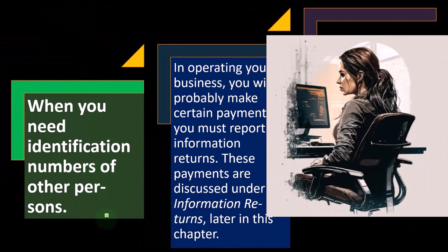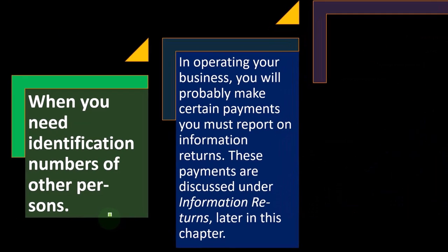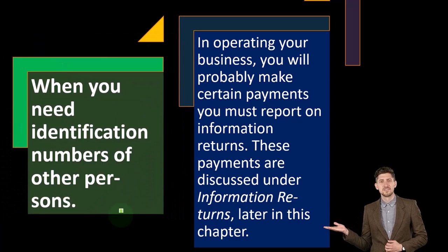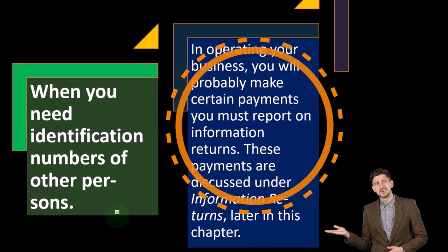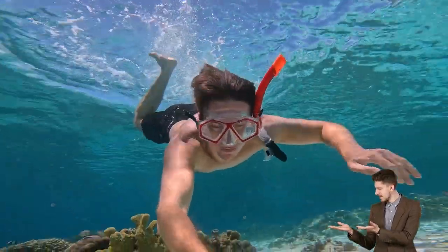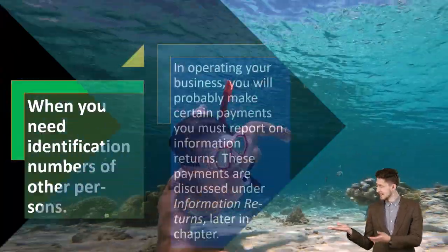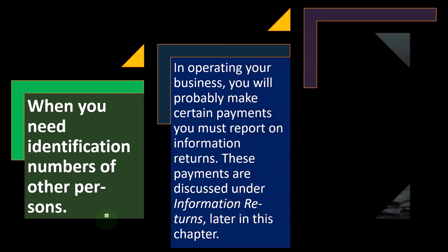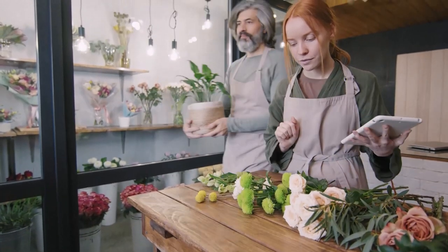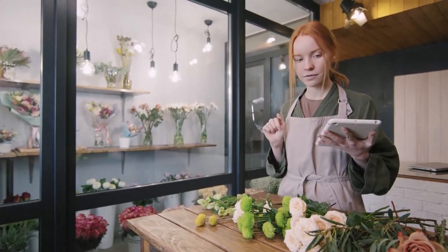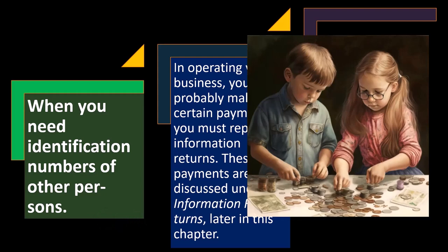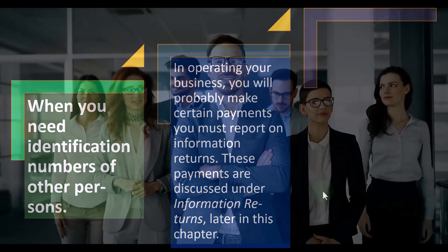When you need identification numbers for other persons: in operating your business, you will probably make certain payments you must report on information returns — we'll dive into those later. If you have employees, you'll have to report them on payroll forms. Payroll is essentially the same for a sole proprietor versus other entities — partnership, corporation, S corporation — you do the withholdings and need an EIN. You might also need to give an EIN to someone issuing you a 1099 because they're paying you not as an employee, but in the course of business.